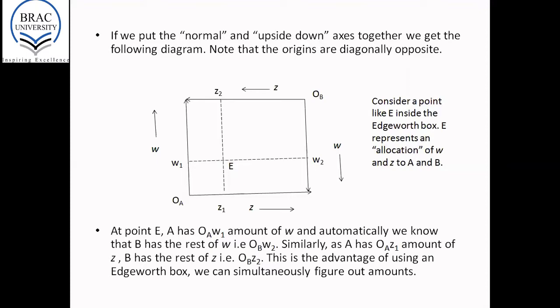And point E represents an allocation of W and Z to A and B. So at point E, individual A or consumer A has OAW1 amount of W measured on the vertical axis.